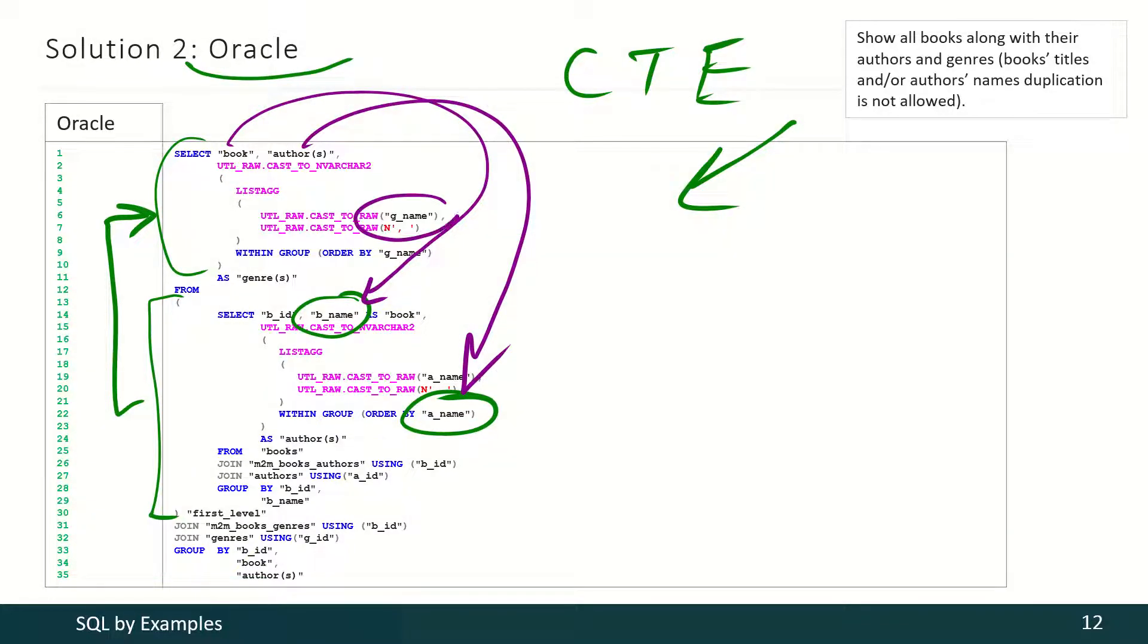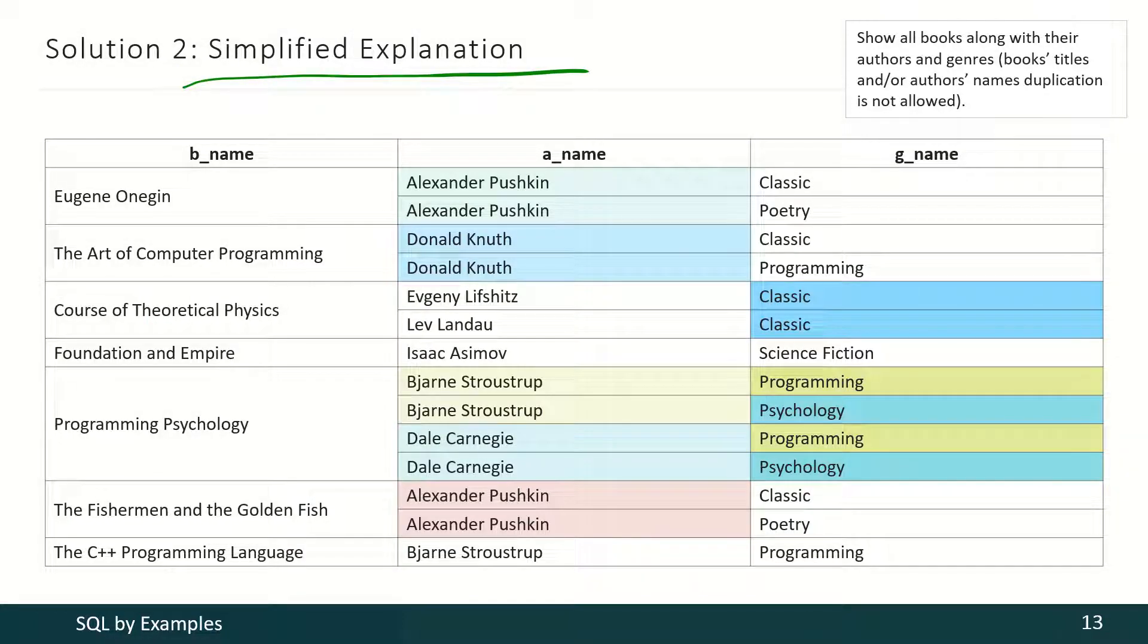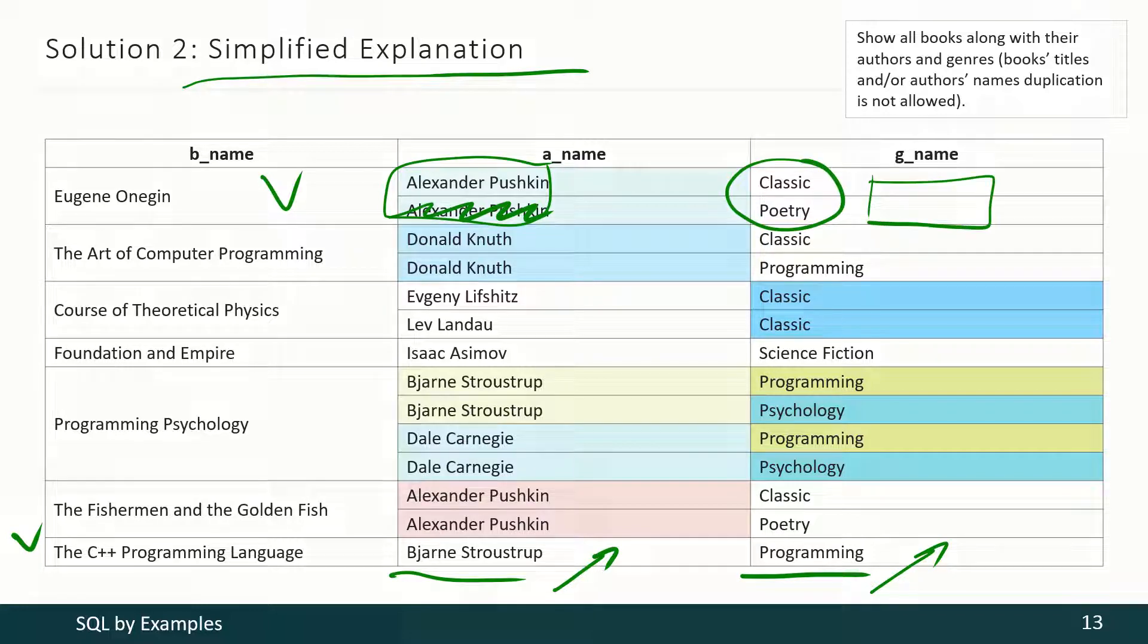And here is visual explanation. If a book has only one author and one genre, that information is just copied into final result. If a book has one author, that information is deduplicated and these two genres produce only one cell containing the information about the first and the second genre.